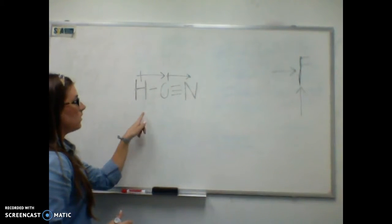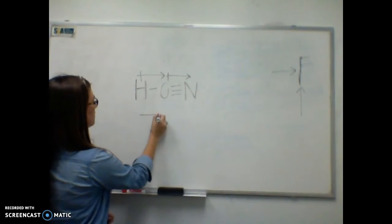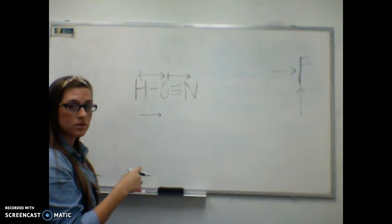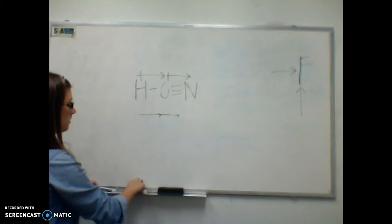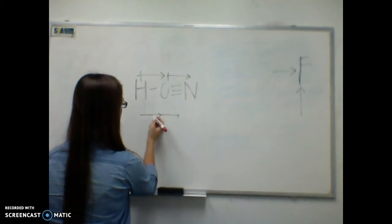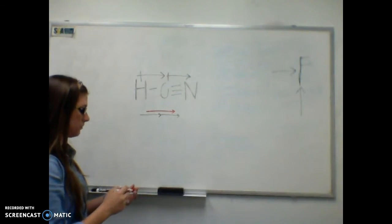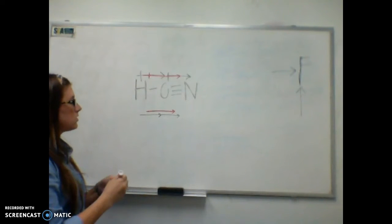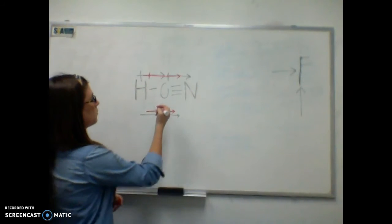When we add these together using the vector sum head-to-tail method, this is the head and this is the tail. We take this arrow and attach it where the head is, with its tail connecting to it. Since they're going in the same direction, we just add them together, and the net would be like this over the whole molecule to the right for HCN. Because there is a net molecular dipole moment, HCN is also polar.